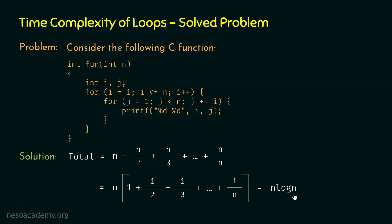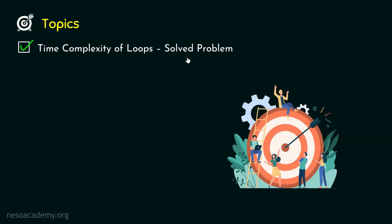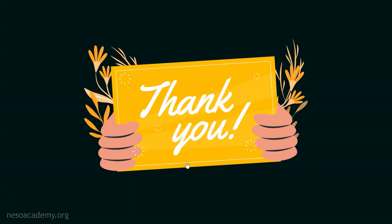Therefore, the time complexity of this nested for loop structure is theta of n log n. Since the time complexity of this nested for loop structure is the same as the time complexity of this function, option C is the correct option. This is the time complexity of the function fun. So we have solved the problem and we are done with this topic. Thank you for watching this presentation. I will see you in the next one.